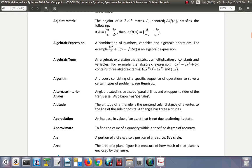Adjoint matrix: the adjoint of a 2×2 matrix A, denoted adj(A), satisfies the following - if the matrix is [a b; c d], then you interchange a and d, and change the signs of b and c.